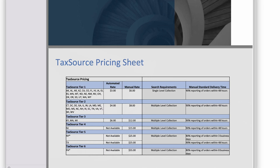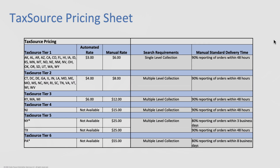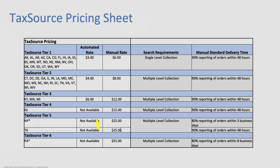There's a pricing sheet that explains how much it costs. In most states, you're able to pull this information automatically and very quickly, and when you do that, it costs usually about three to four bucks. When it's not automatically available, you can manually pull it, and in those cases it's going to cost six to eight bucks. In some rare cases it'll be more than that, but usually the cost isn't too crazy.